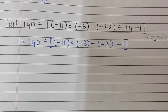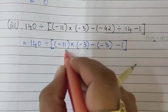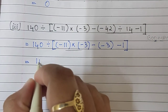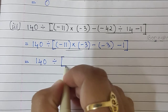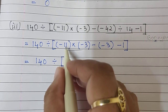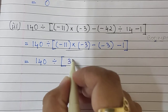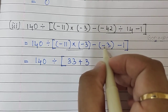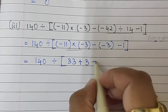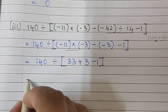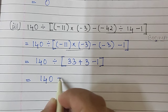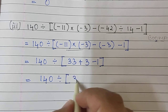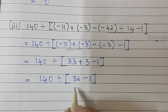The next operation according to BODMAS is Multiplication. So I will write: 140 divided by — minus into minus will be plus — 11 into 3 will be 33. Then minus of minus, I write straight away plus 3, because minus into minus is plus. And minus 1 as it is. So 140 divided by 33 plus 3 is 36. 36 minus 1. Again, I will work inside the bracket.